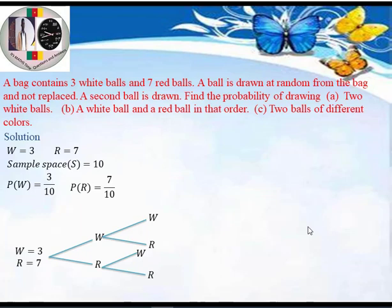Now let's fill the branches with actual probability values. For the first draw, the probability of getting a white ball is 3/10 and getting a red ball is 7/10. The question states we draw without replacement, meaning when we draw the first ball we don't put it back. So the number of balls in the bag reduces by one — instead of 10 balls we have 9 balls for the second draw.